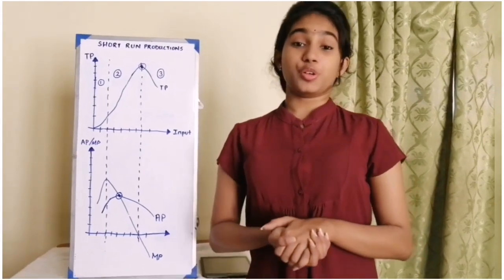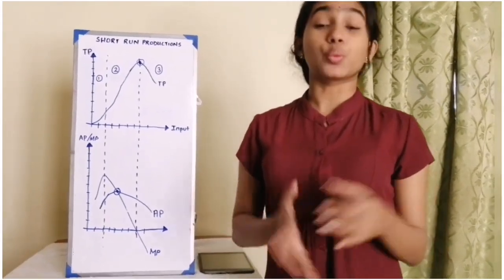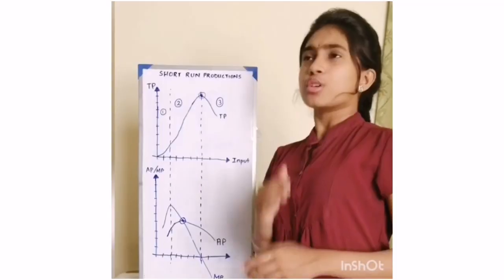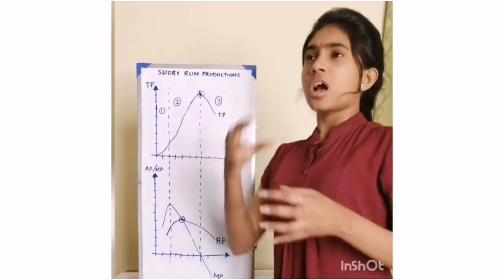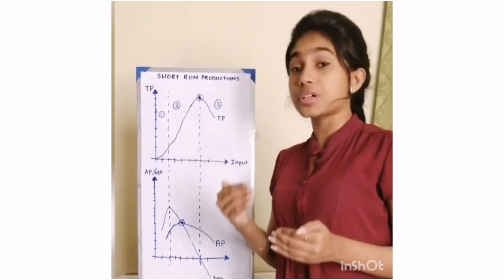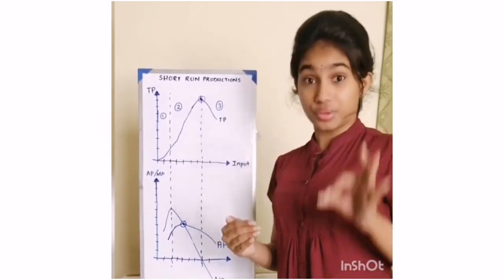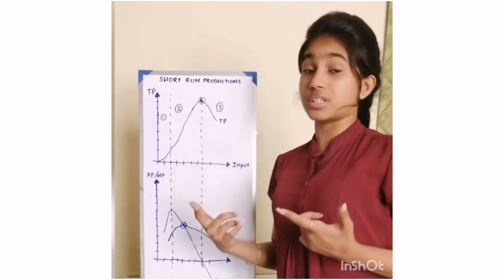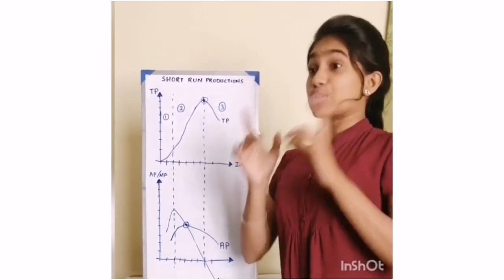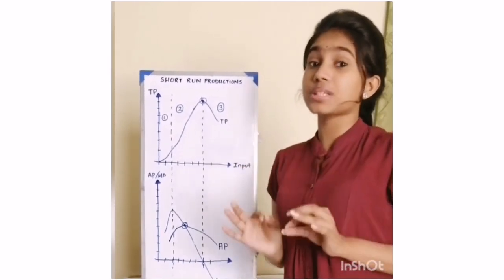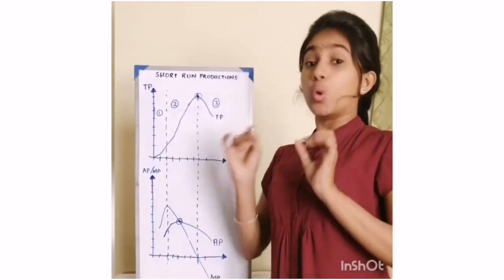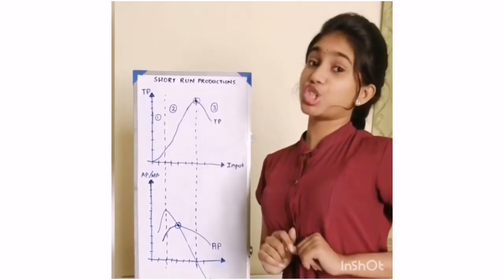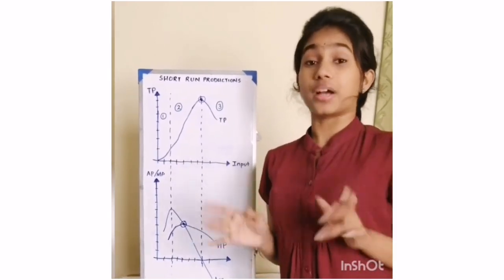In this video for the subject of economics, we are going to cover the section of short-term production firms. If you look at the past papers, the questions from the production firms come from question numbers 3 and 4. We are going to see the most in-depth part of this chapter — the relationship between short-term productions and the relationship between short-term production costs.